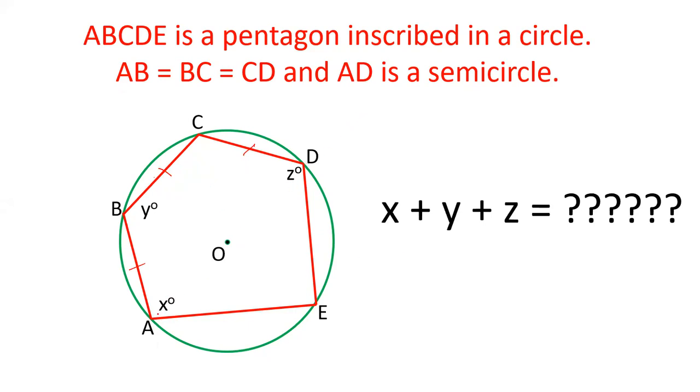You have to find out the value of angle A plus B plus D, and X plus Y plus Z means what? Angle BAE plus angle B plus angle D. We have to find this value. Let's see how we can solve this question.